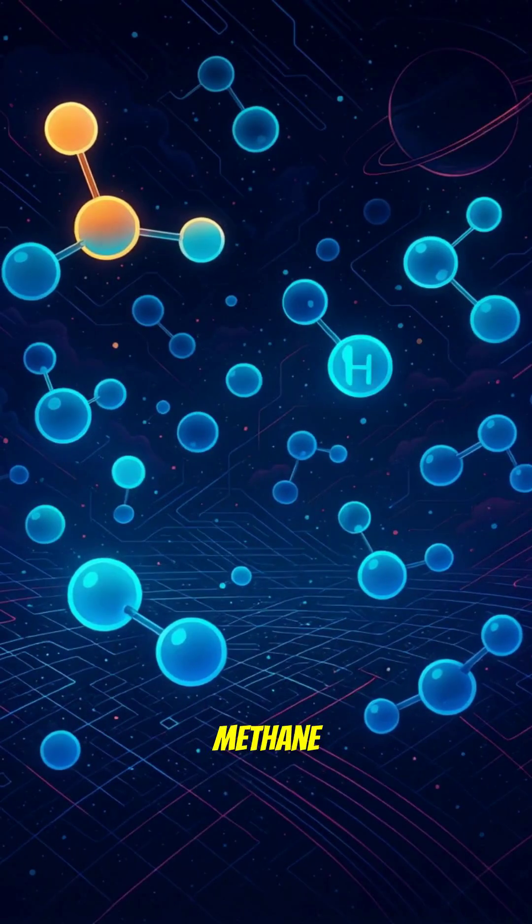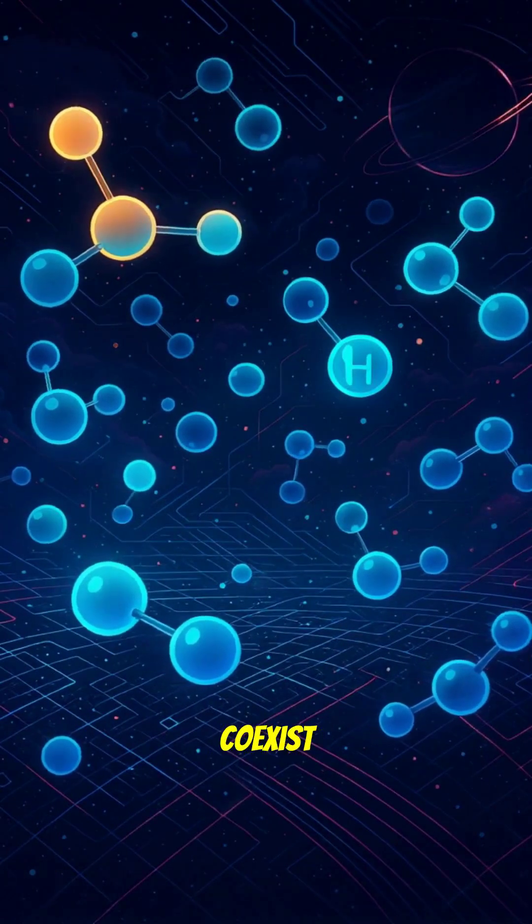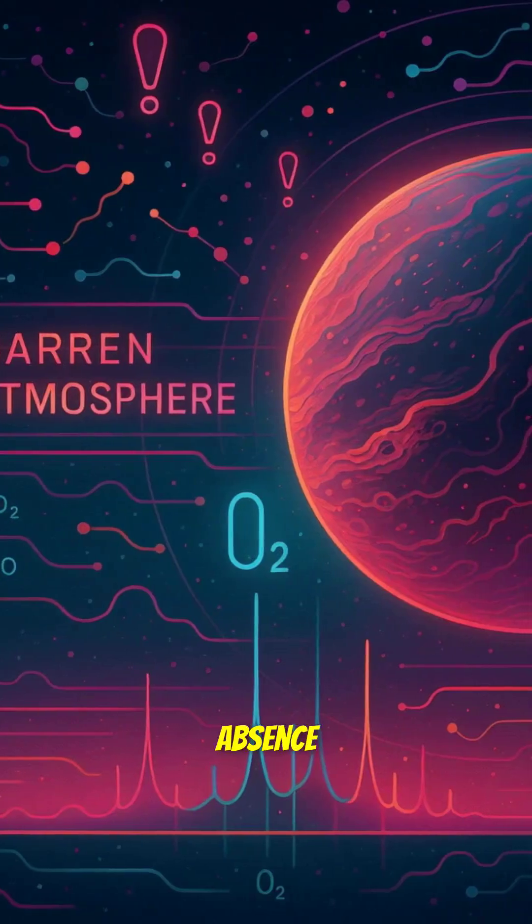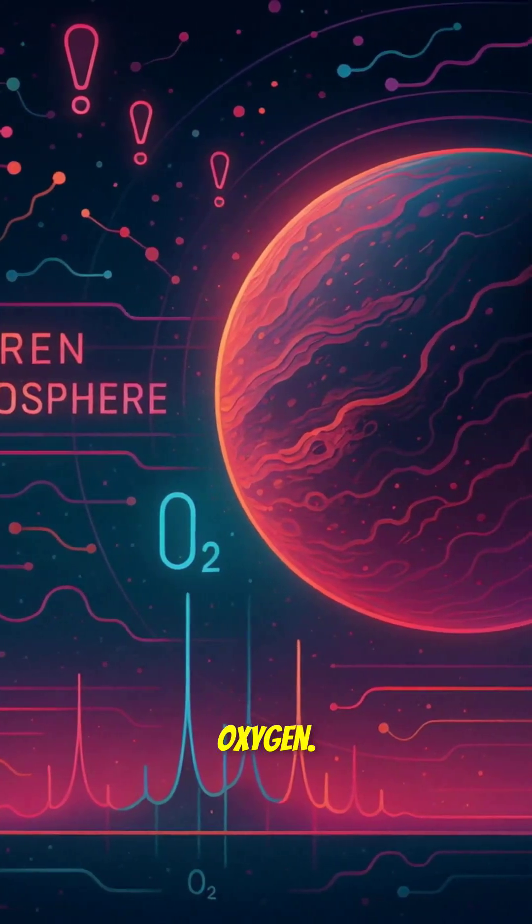Things like methane or water vapor, which often coexist with life. The absence of these helper gases is a big clue it's dark oxygen.